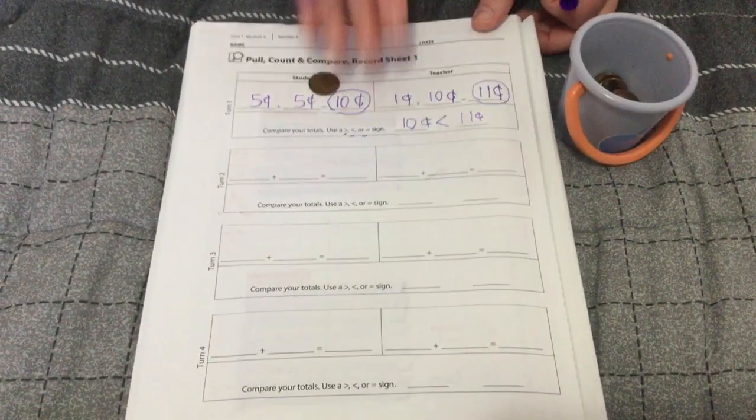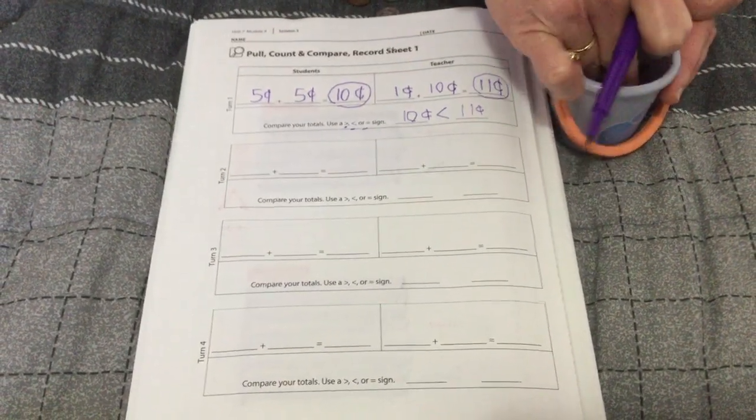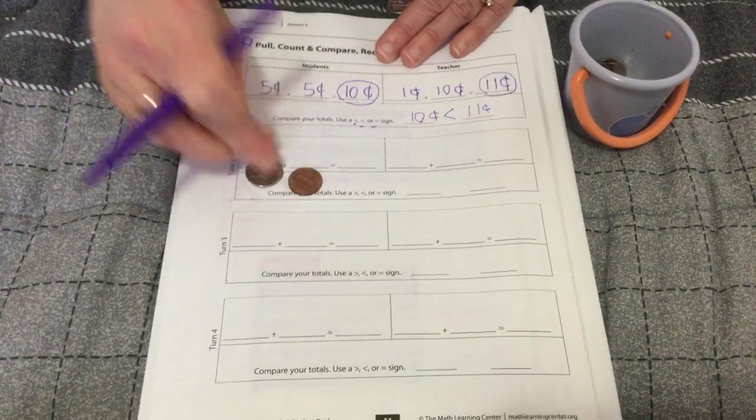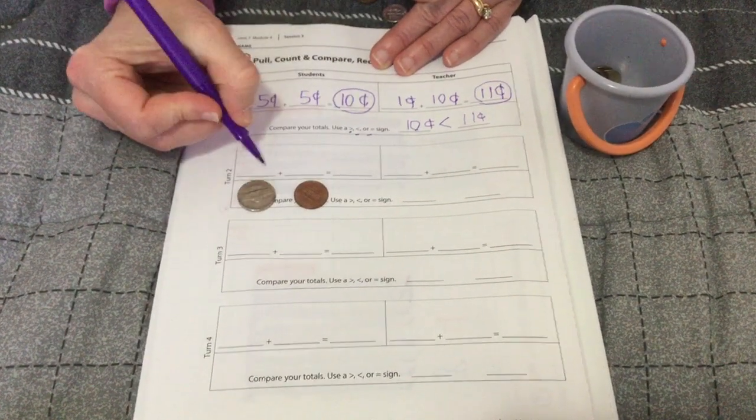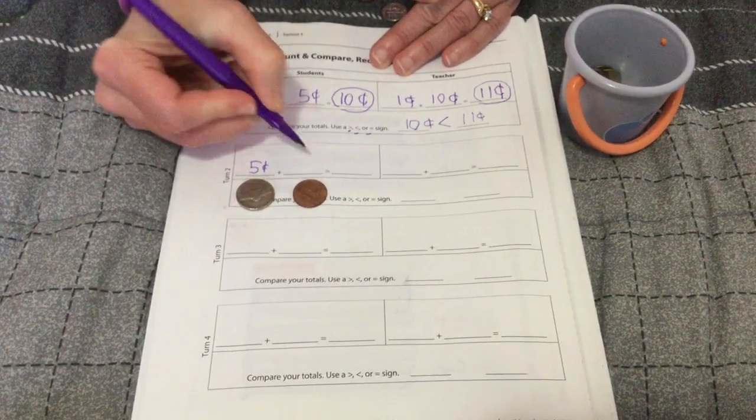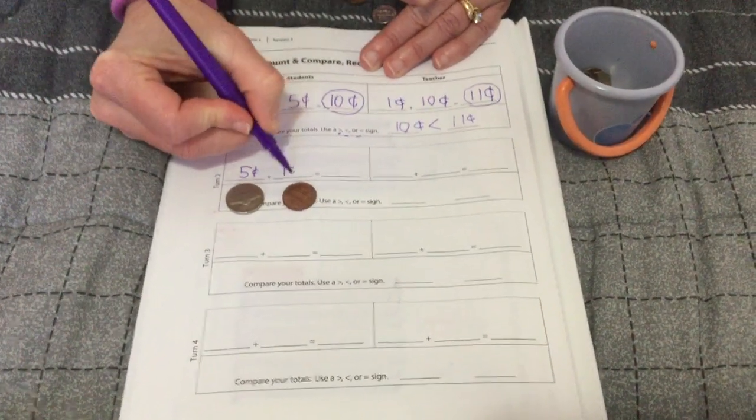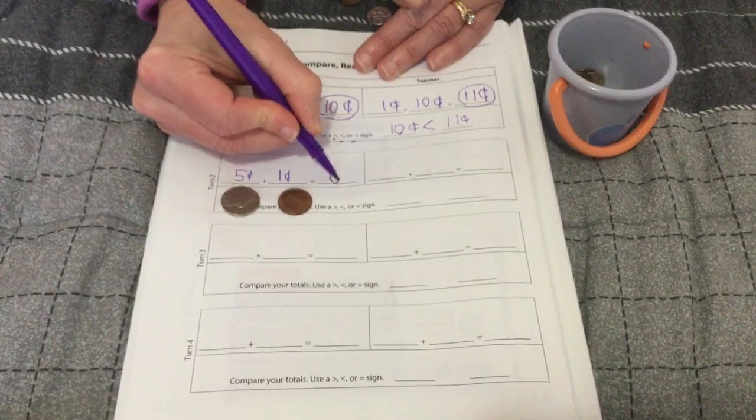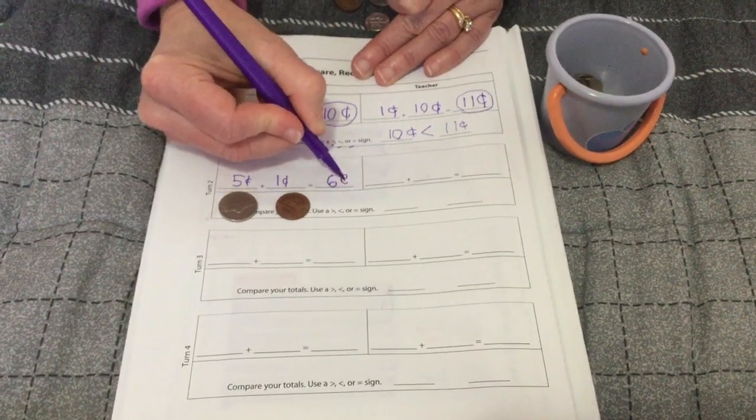All right, same thing again. Let's see. This time I got a nickel and a penny. Five cents plus one cent equals six cents.